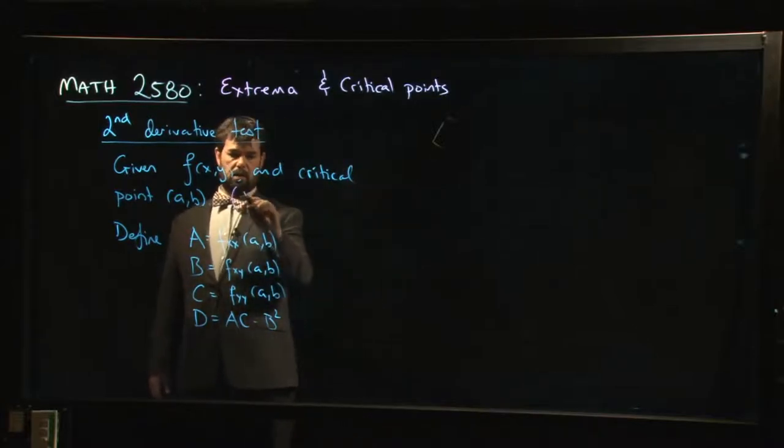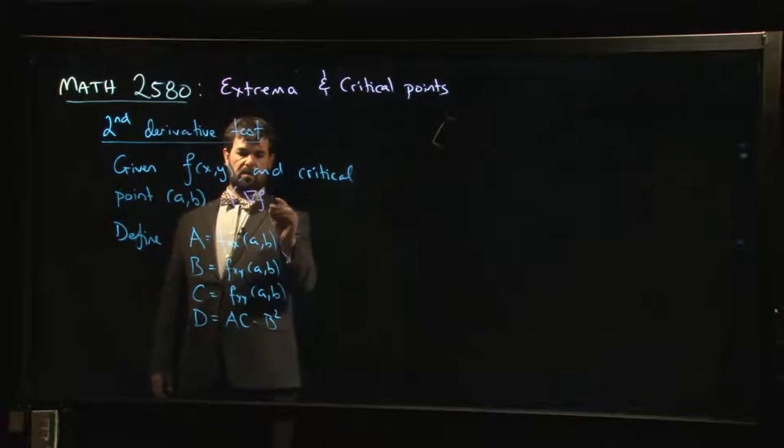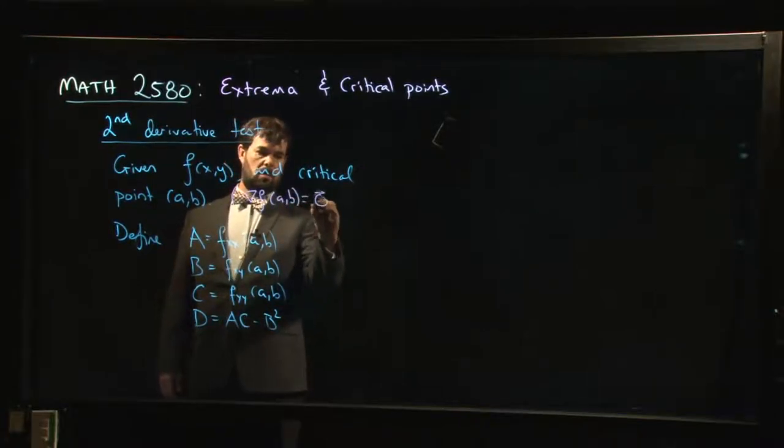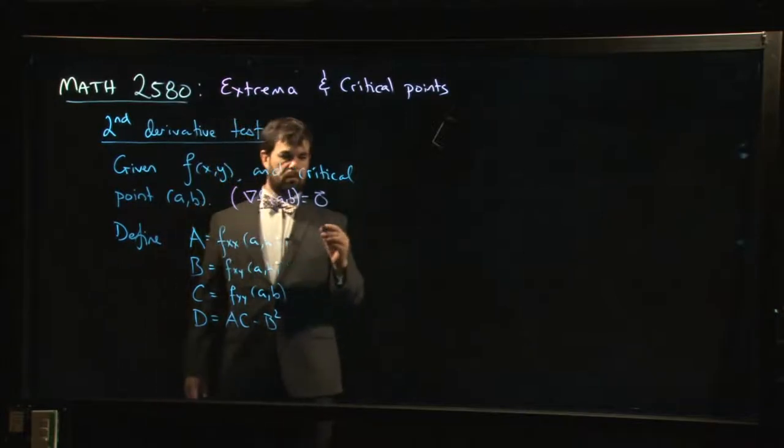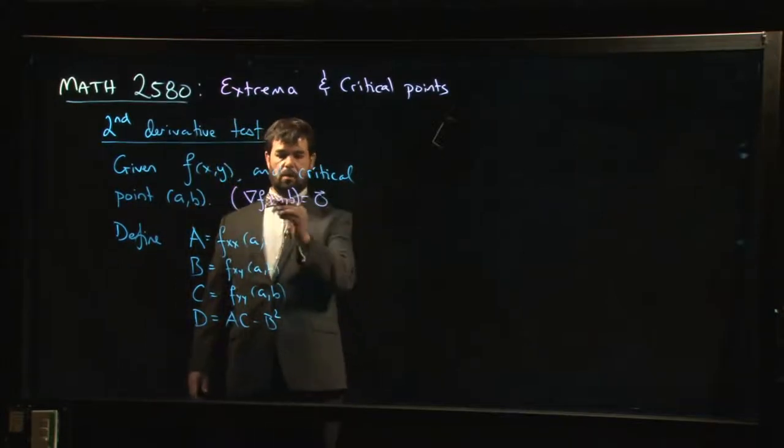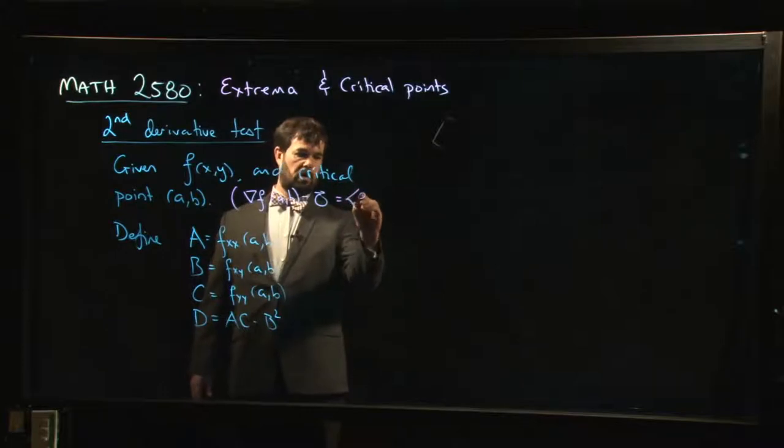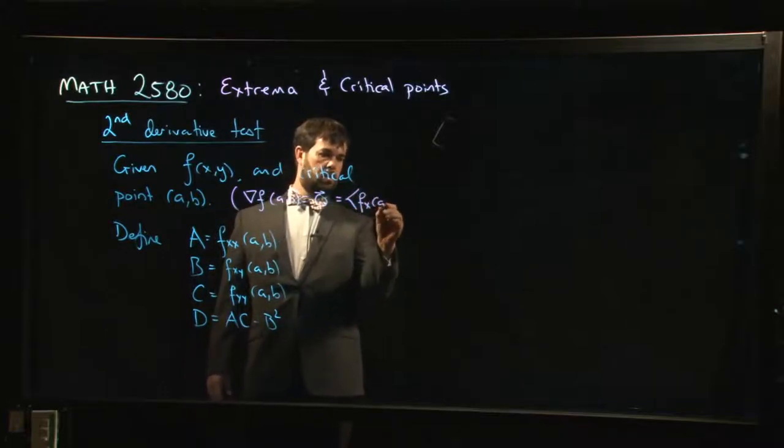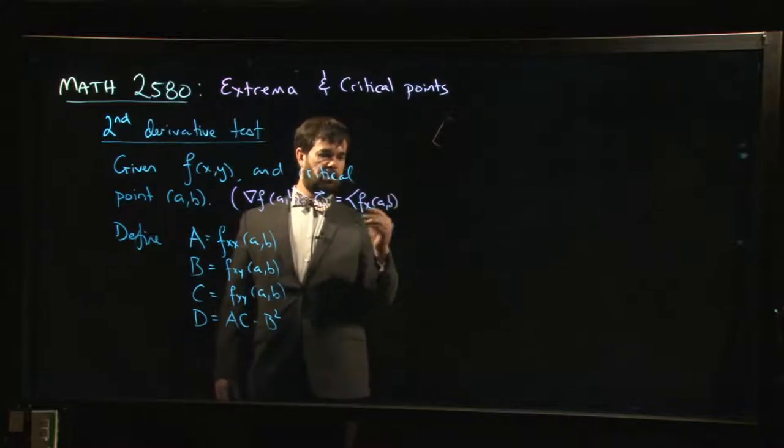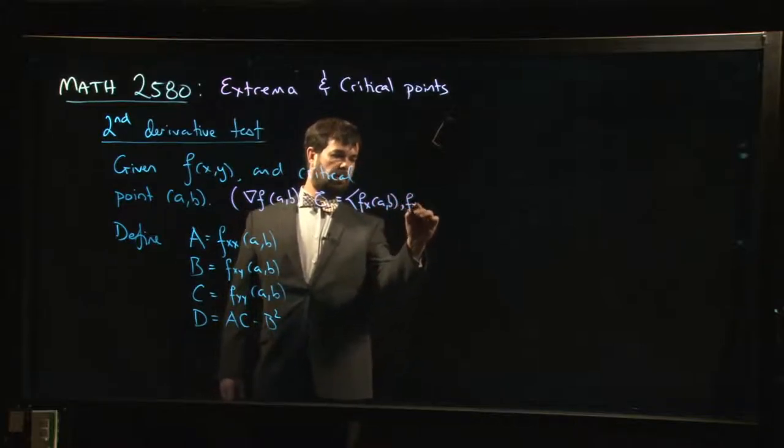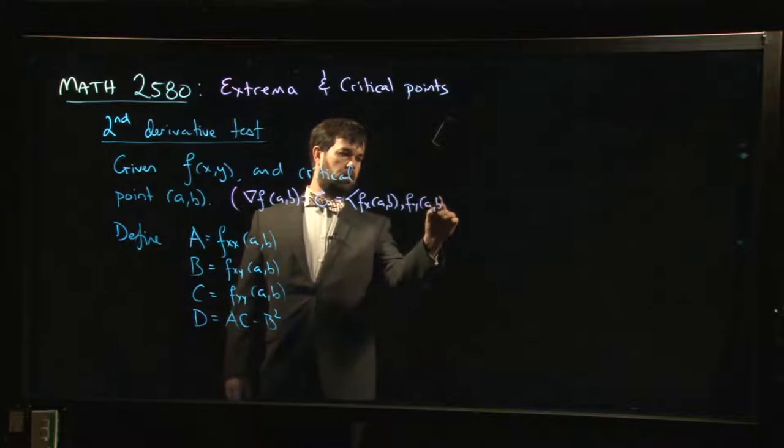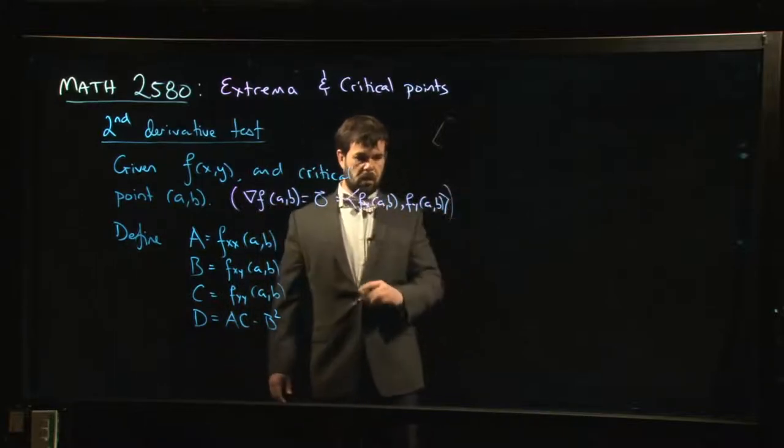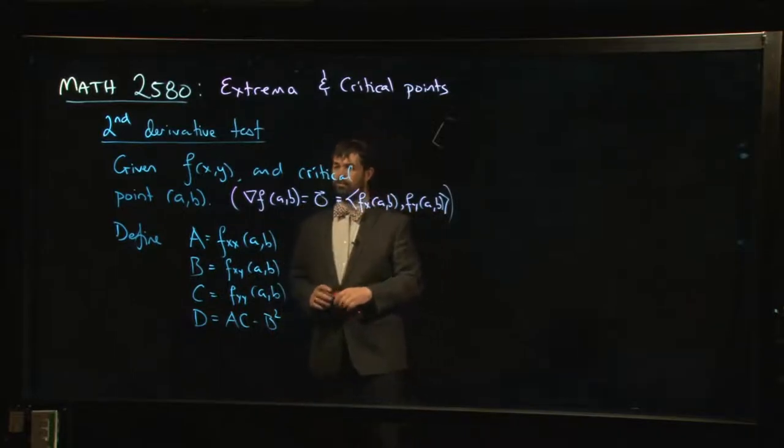Remember, this means that the gradient of F at (a,b) vanishes, which is the same thing as saying the gradient is comprised of the two first-order partial derivatives. So if the gradient is giving us the zero vector, it means that both the x derivative and the y derivative have to vanish at that point. So that's what it means to have a critical point.